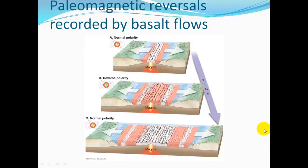The paleomagnetic reversals are also recorded in basaltic flows. As new crust forms, magma solidifies and records the direction of the North Pole. If the North Pole is in the north, we get normal polarity — shown as white rock in this diagram. If the polarity is reversed, the rock is shown as pink. As plates diverge and magma forms new rock, alternating bands of white and pink rock record the history of magnetic reversals. This is very strong evidence that new crust is forming as these plates pull apart.